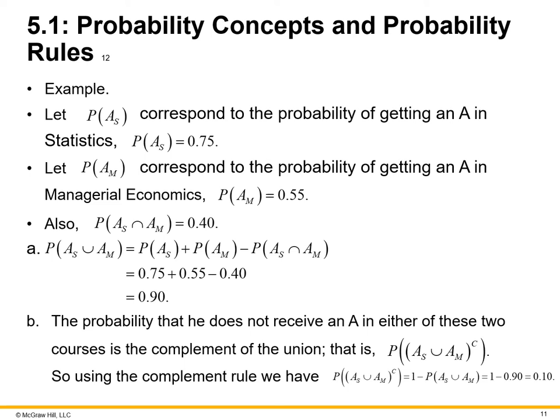To answer the first question, what is the chance of getting an A in either class? It's the probability of A union AM. Imagine a Venn diagram where they're both circled with each other, A statistics class for AS and then AM equaling managerial economics. That equals breaking them out to be the additive rule, P of A statistics, AS, plus P of AM, combining those together and then subtracting the union between the two, which is the percent of opportunity he believes between AS, 75%, and the 55%, 0.55 of AM. Add those together in the order of operations, 0.75 plus 0.55 minus 0.40 equals 90%. So it's a 90% opportunity that he'll get an A in either class. The probability that he does not receive an A in either of these two courses is a complement of the union.